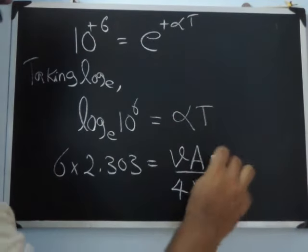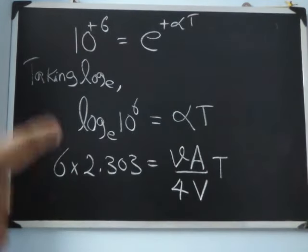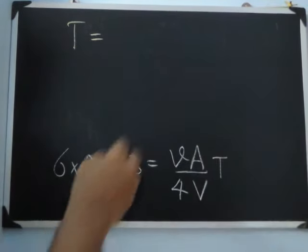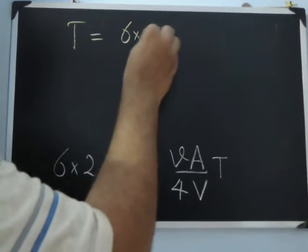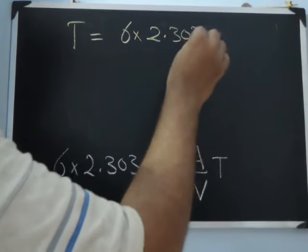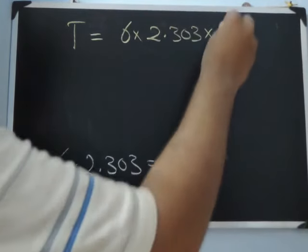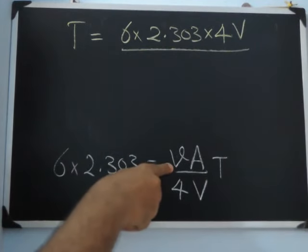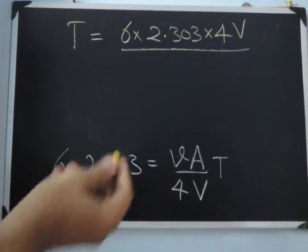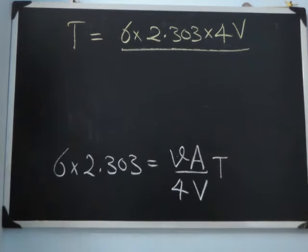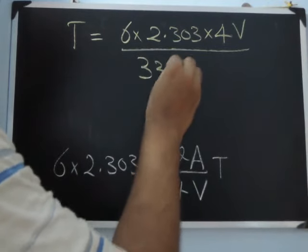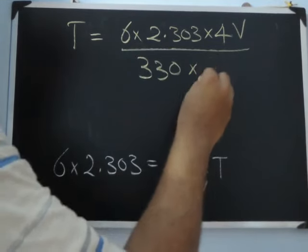Now we can rearrange this to get T. So T is 6 into 2.303 into 4V divided by the velocity of sound, which at room temperature in air is 330 meters per second, into A.